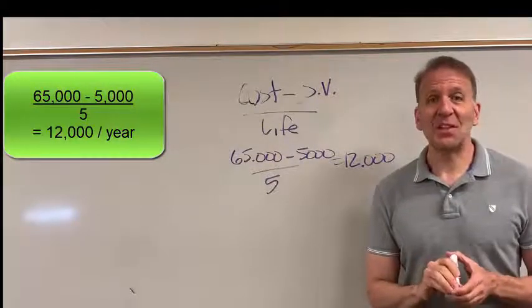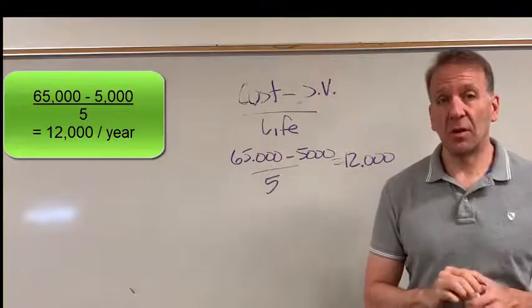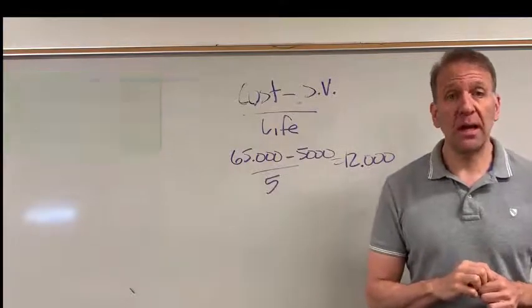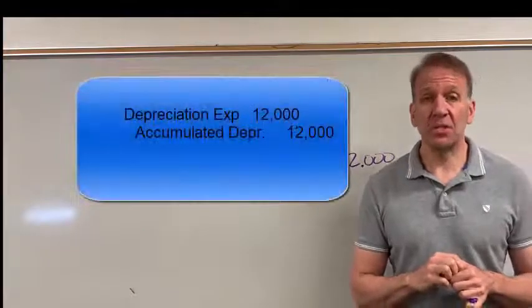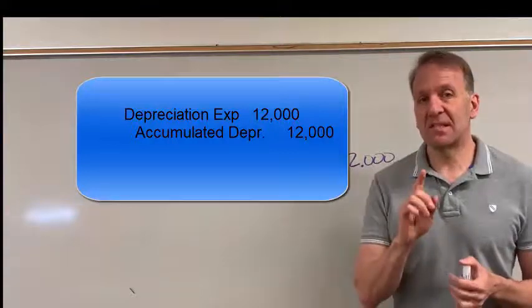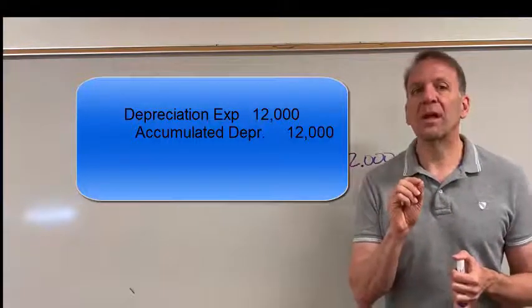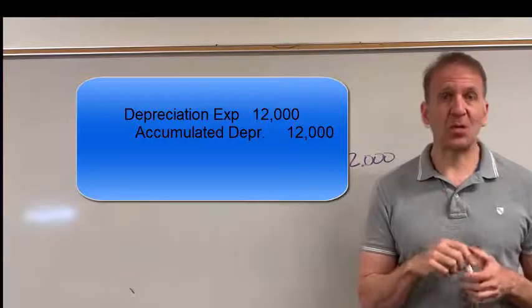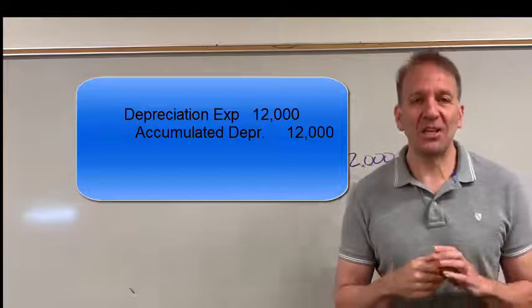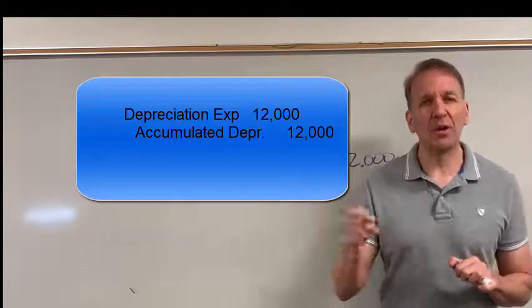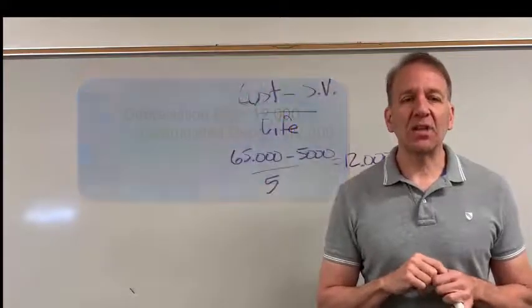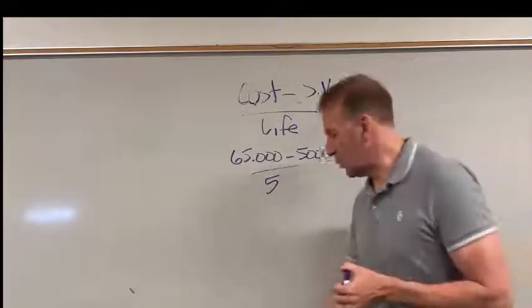Let's take a look at the journal entry associated with this adjustment. At the end of the year, the journal entry will be a debit to depreciation expense, like we always did with prepaid expenses. Now here's the little difference: we're going to credit accumulated depreciation $12,000. Accumulated depreciation is a contra asset account. We'll talk about this a little bit more later in this video.